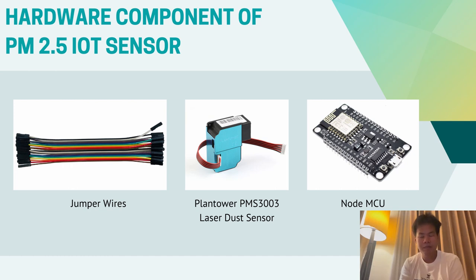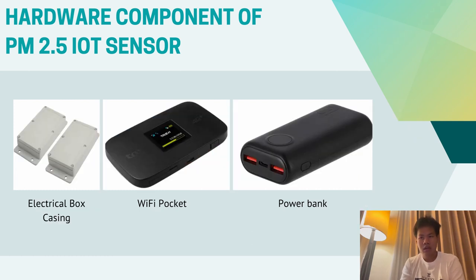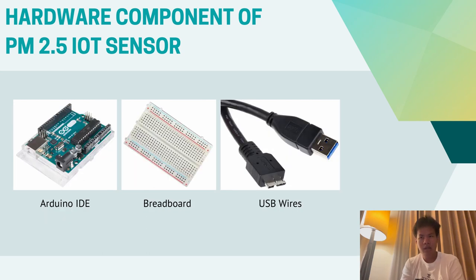The hardware components of our PM2.5 IoT sensor system include: a jumper wire, a power tower, a PMS5003 laser dust sensor, a NodeMCU, an electronic box casing, a Wi-Fi pocket, a power bank, an Arduino IDE, a baseboard, and a USB cable.